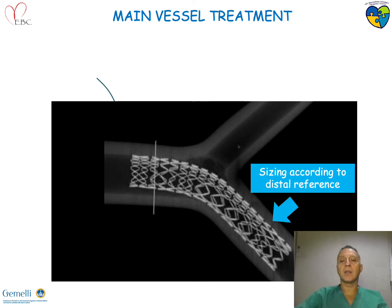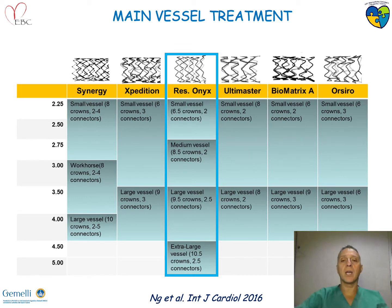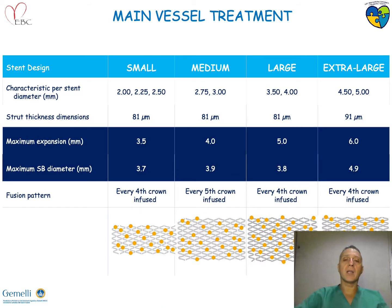For the main vessel, what is recommended by EBC sizing is according to the distal reference, and we should then adjust the proximal part according to the proximal main vessel. If we look at the different stents by different manufacturers, the Resolute Onyx has the unique feature of having four different sizes with a specific structure. And here is the chart.